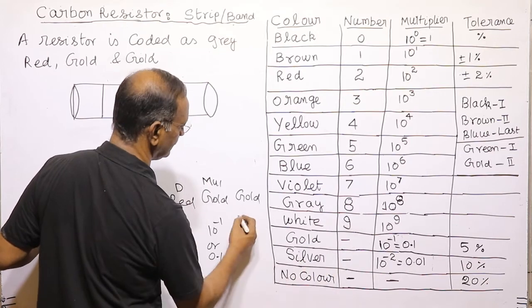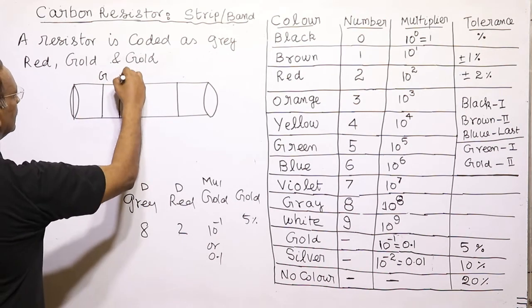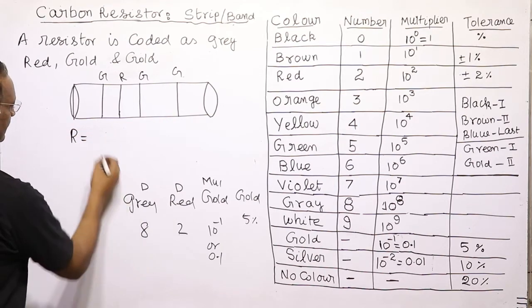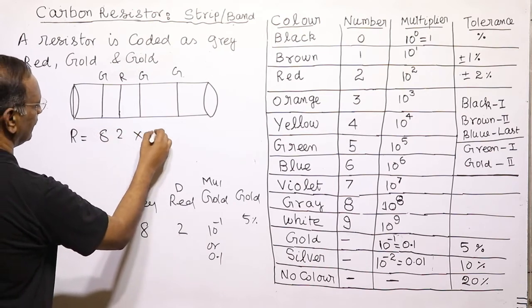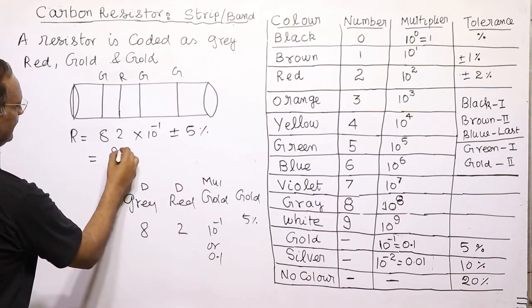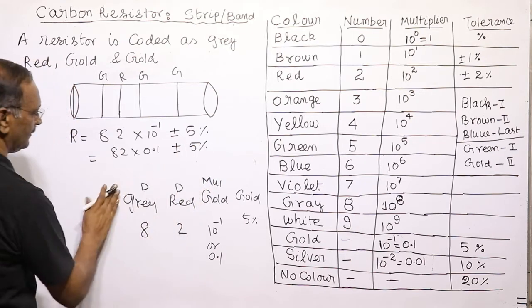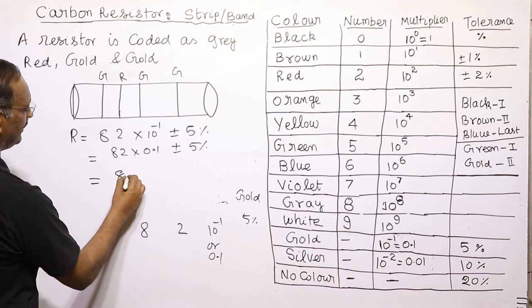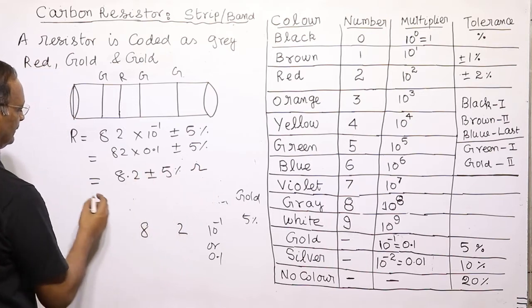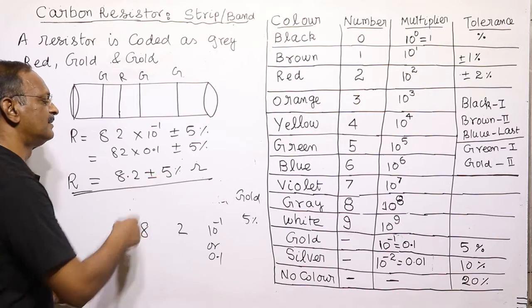Gold tolerance is 5 percent. So the resistance equals first digit 8, second digit 2, multiplied by 10 to the power minus 1, plus or minus 5 percent. This gives 82 into 0.1, which equals 8.2 ohm, plus or minus 5 percent. The given resistance should have a value of 8.2 ohm with a tolerance of plus or minus 5 percent.